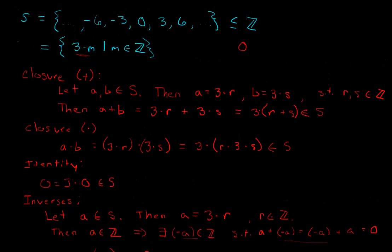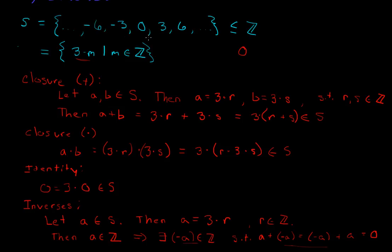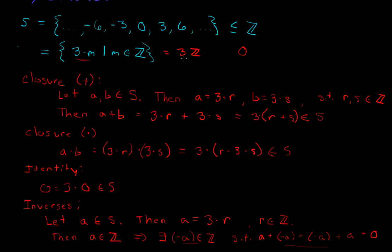To wrap things up: this set S is closed under addition and multiplication — the same operations defined in ℤ — it contains the additive identity of ℤ, and every element has an additive inverse also in the set. So we have proved that S is a subring of ℤ. This set actually has a name: it's 3 times the integers, so we write it as 3ℤ. I hope that clears things up for showing that one ring is a subring of another ring.